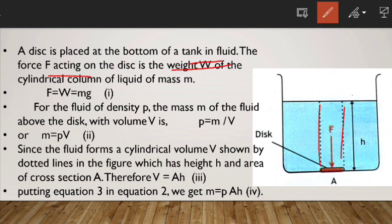F is equal to W is equal to mg. For the fluid of density ρ, the mass m of the fluid above the disk with volume V: by definition, density is ρ equals m divided by V, mass per unit volume.